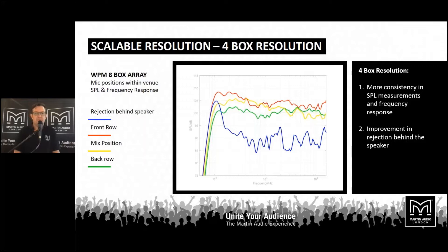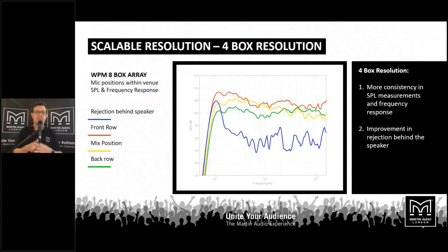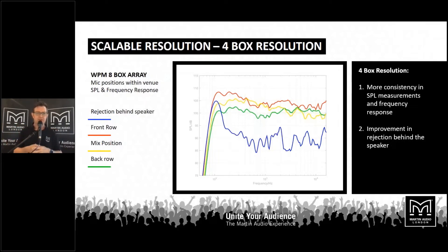As we begin to optimize at four-box resolution, I now have only two channels of DSP with FIR filters and mechanical optimization working. You can immediately see that behind the speaker, we've begun to get control over rear rejection and the sound coming out the bottom of the array. In terms of frequency response, it's a little bit more consistent. This is a relative frequency response — we flatten the PA and then afterwards add a voicing curve to get the desired musical response.